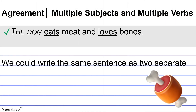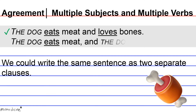We could write the same sentence as two separate clauses: the dog eats meat and the dog loves bones. Though it would be a bit repetitive, it's still a correct statement.